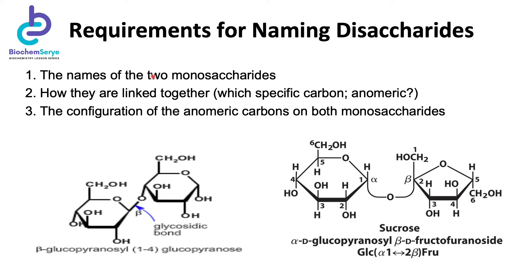Now let's go to naming these disaccharides. To name the disaccharides, we need at least three basic pieces of information. First, we should know the names of the two monosaccharides comprising the disaccharide — for example, a disaccharide composed of two glucose moieties, or one where the first monosaccharide is glucose and the second is a furanose form, which is fructose. Secondly, we should know how these monosaccharides are linked together — knowing which specific carbons are involved and if the carbons involved in the glycosidic linkage are anomeric or not.